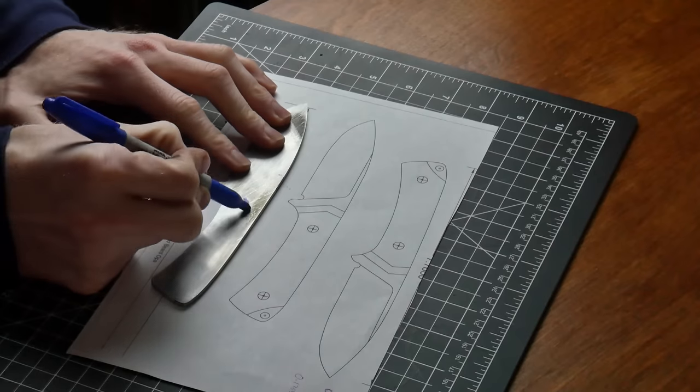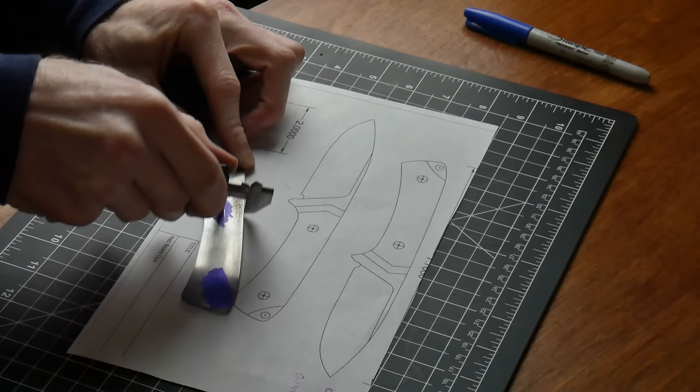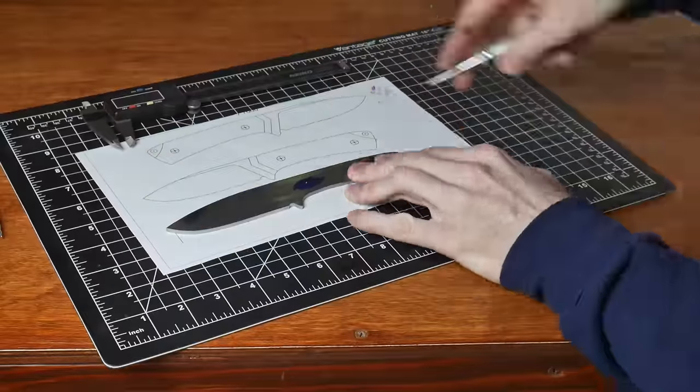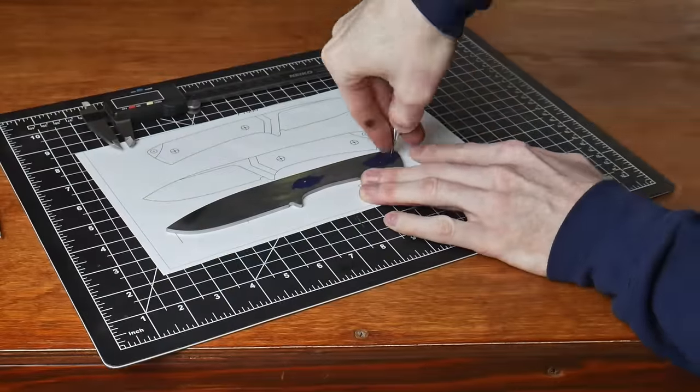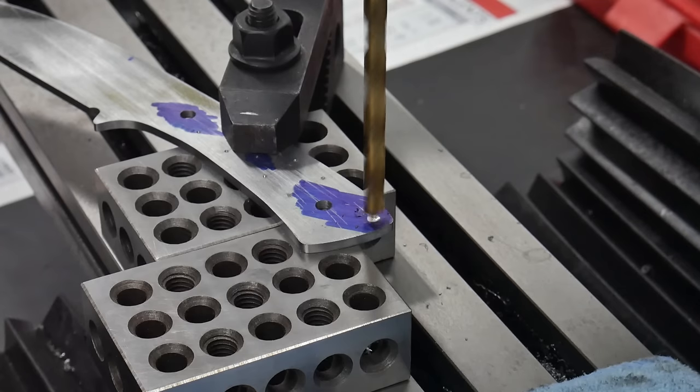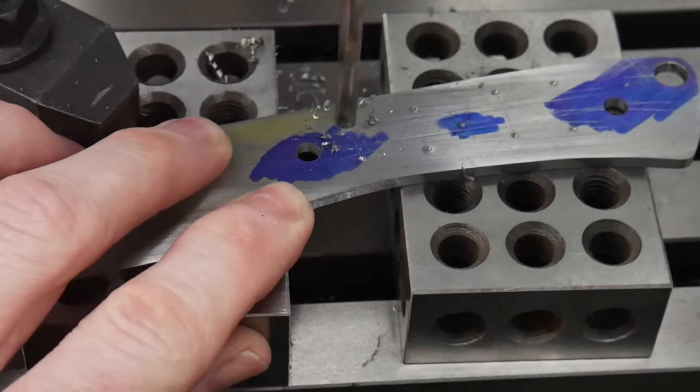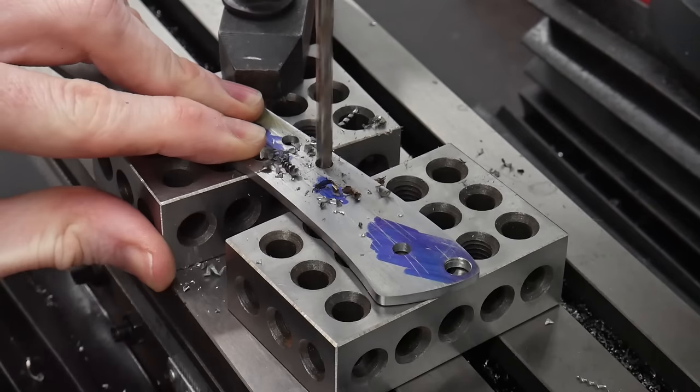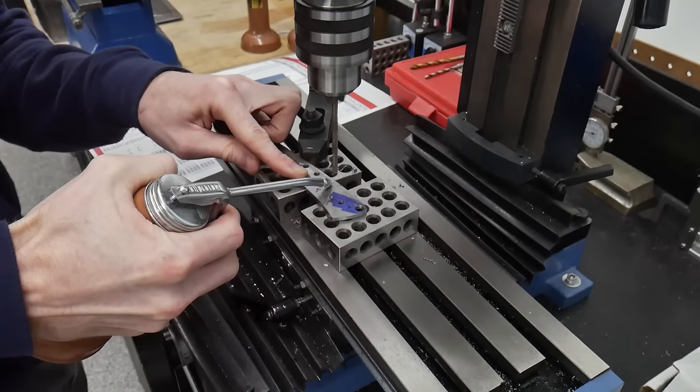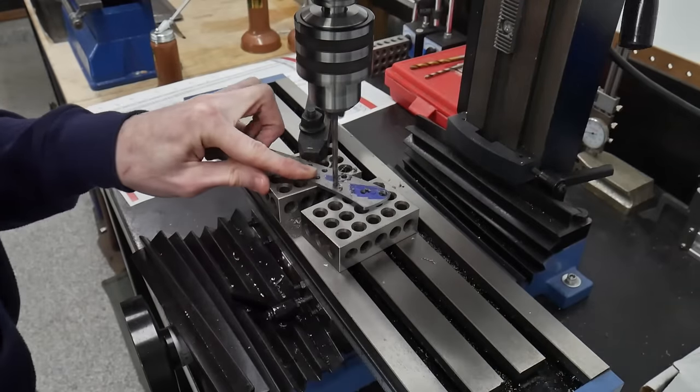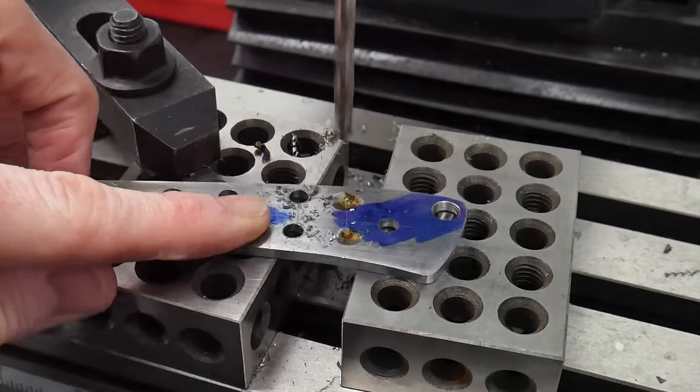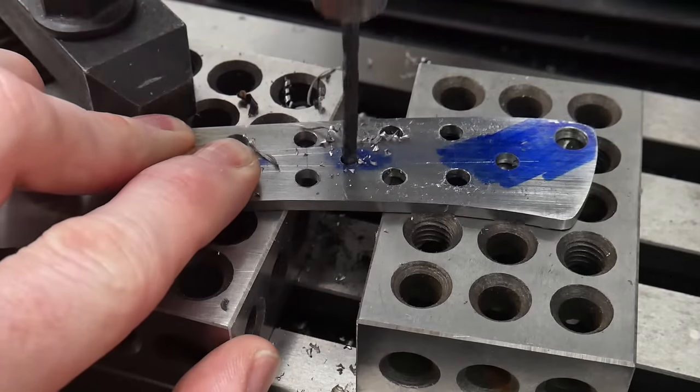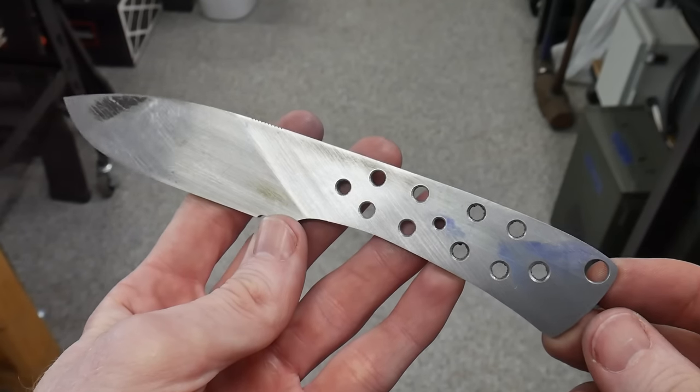Next up we'll be drilling some holes in our tang to accommodate our tried and true Corby fasteners. I drilled two number 13 holes for the quarter-inch Corby fasteners, one large quarter-inch hole for our lanyard, a multitude of glue travel/weight reduction holes scattered around, and finally a number 30 hole in the center for a 1/8 of an inch pin. This 1/8 pin is more of a decorative touch than anything but will provide additional strength in the handle.